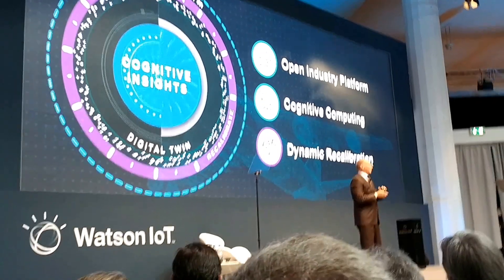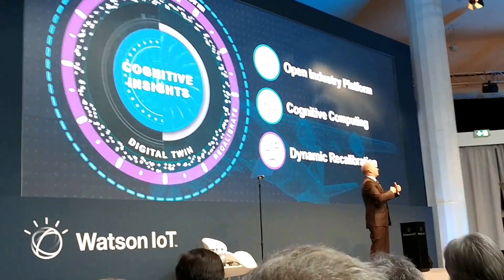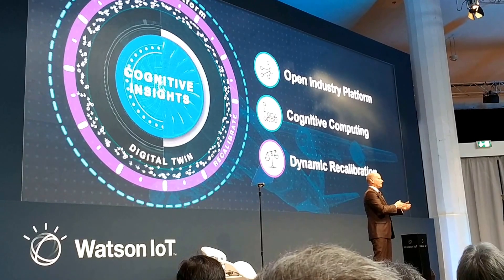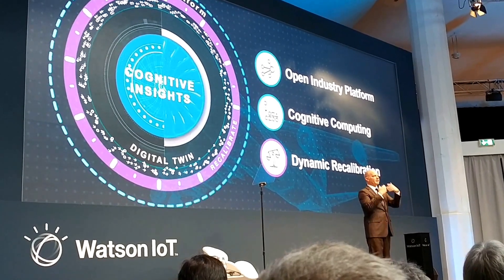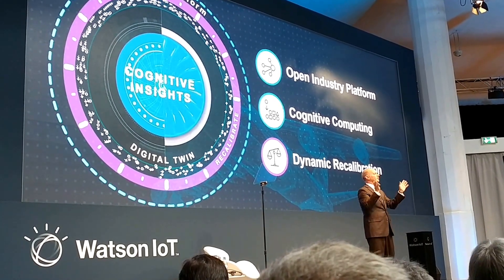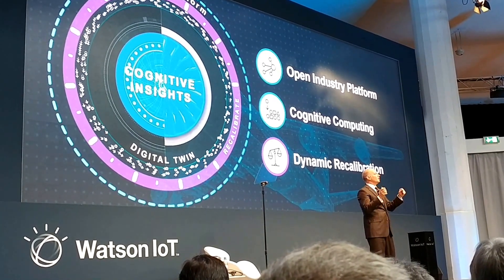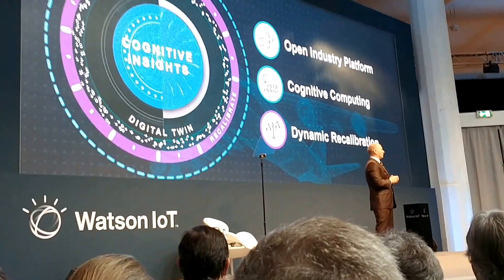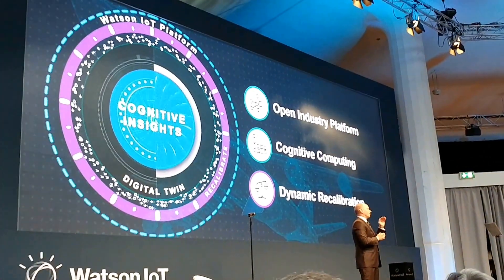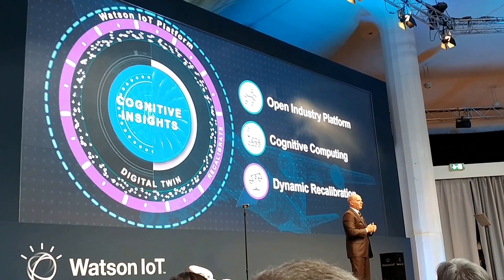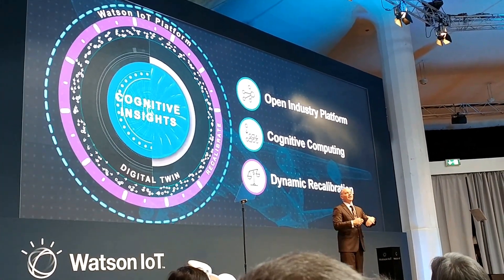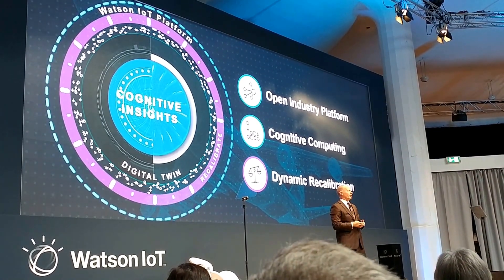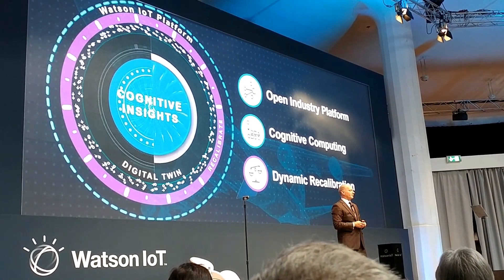A digital twin, when operating correctly, not only represents a picture or something you can visualize and explore — it actually works to dynamically recalibrate your environment, affecting the design, the build, and the operations phases of everything you do around that particular device.